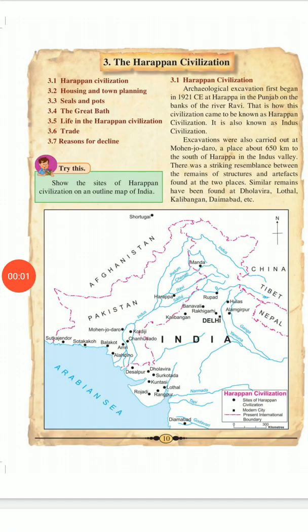Hello students, welcome to Smart Word, a school of complete education. We are going to learn history chapter 3: the Harappan civilization. Let's learn about Harappan civilization — housing and town planning, seals and pots, the Great Bath, life in the Harappan civilization, trade, and reasons for decline. You should definitely try this: show the sites of Harappan civilization on an outline map of India.